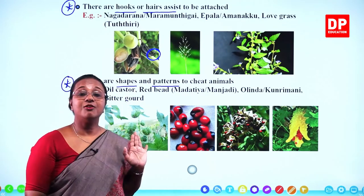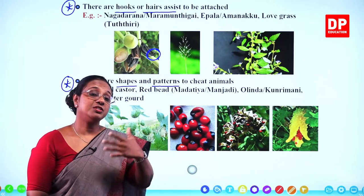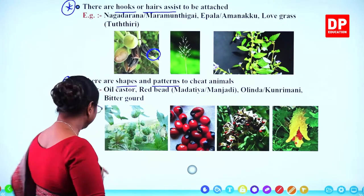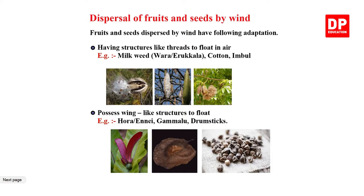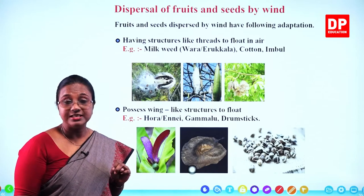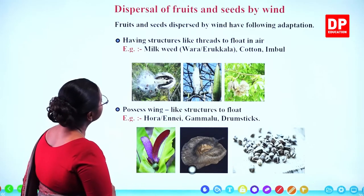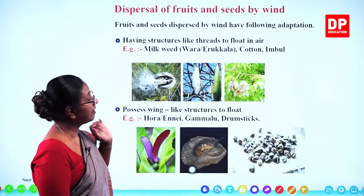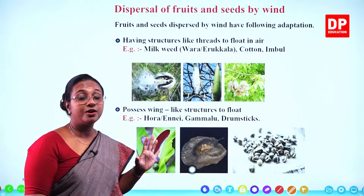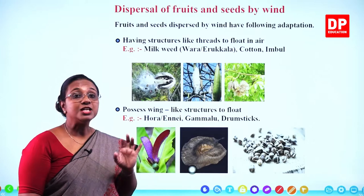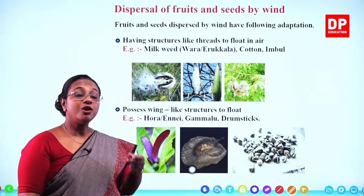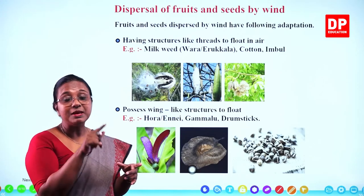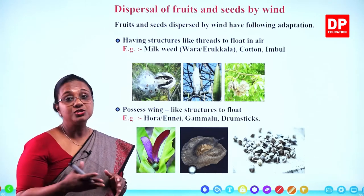You can understand all these adaptations and relate them to other fruits and seeds as well. Moving on to dispersal by wind — the second method. Fruits and seeds dispersed by wind have several adaptations. We discussed cotton, which has very tiny, light seeds, and drumstick, which has a wing-like membrane around the seed. Now we will look at all the adaptations in detail.